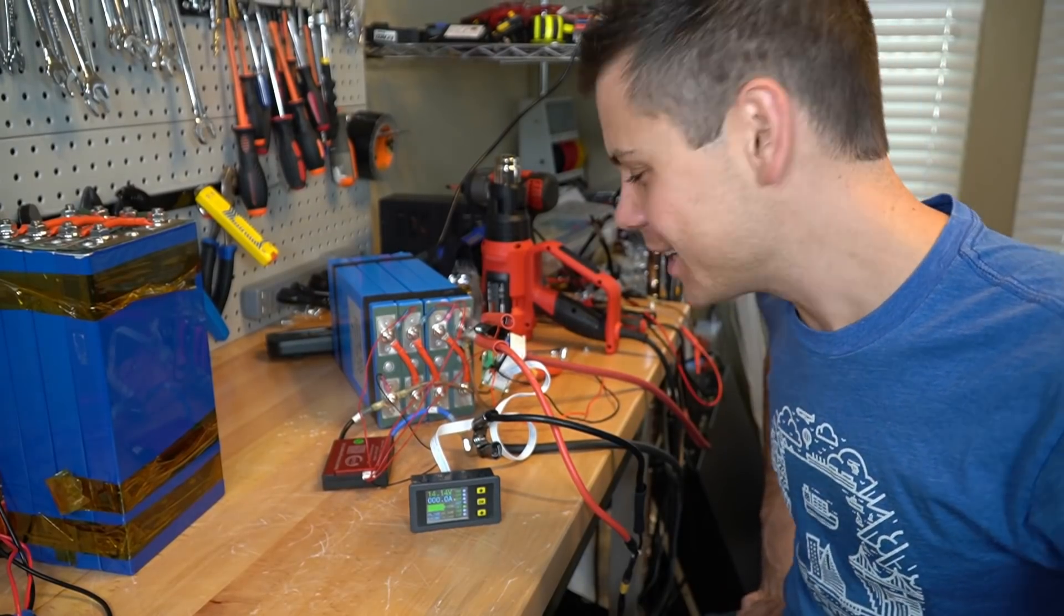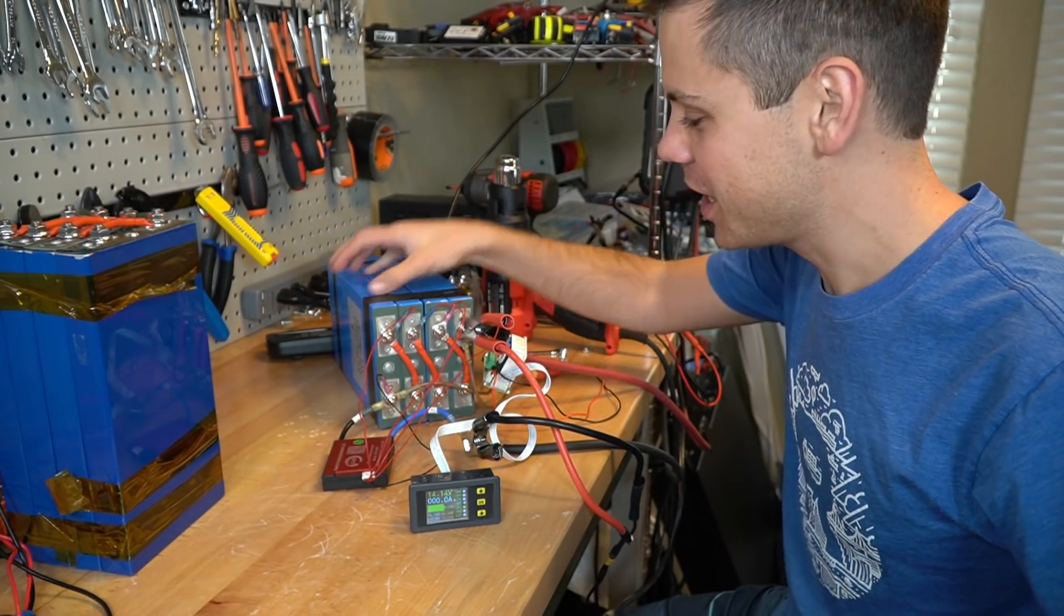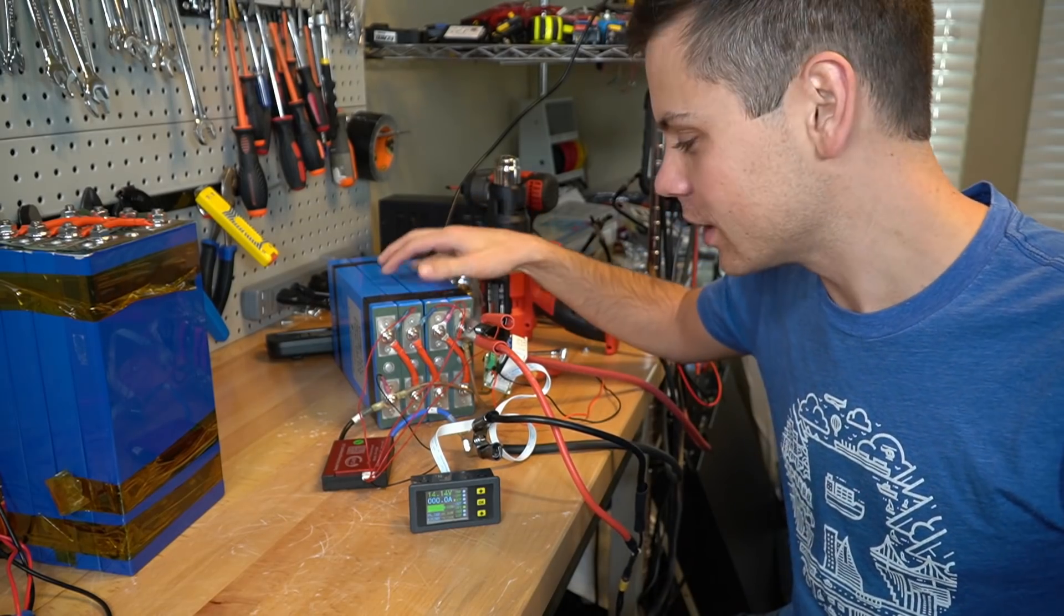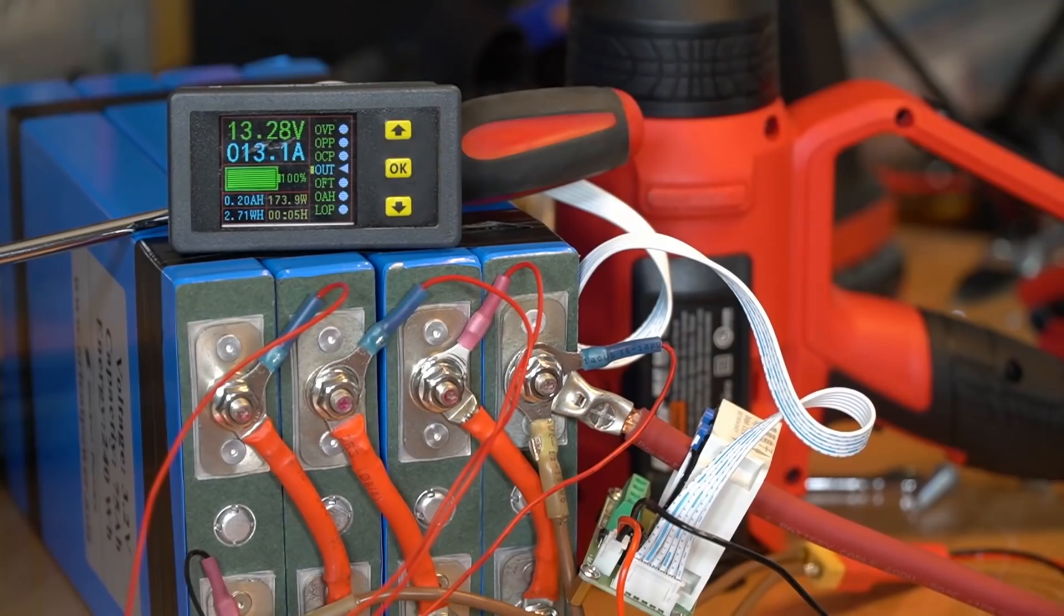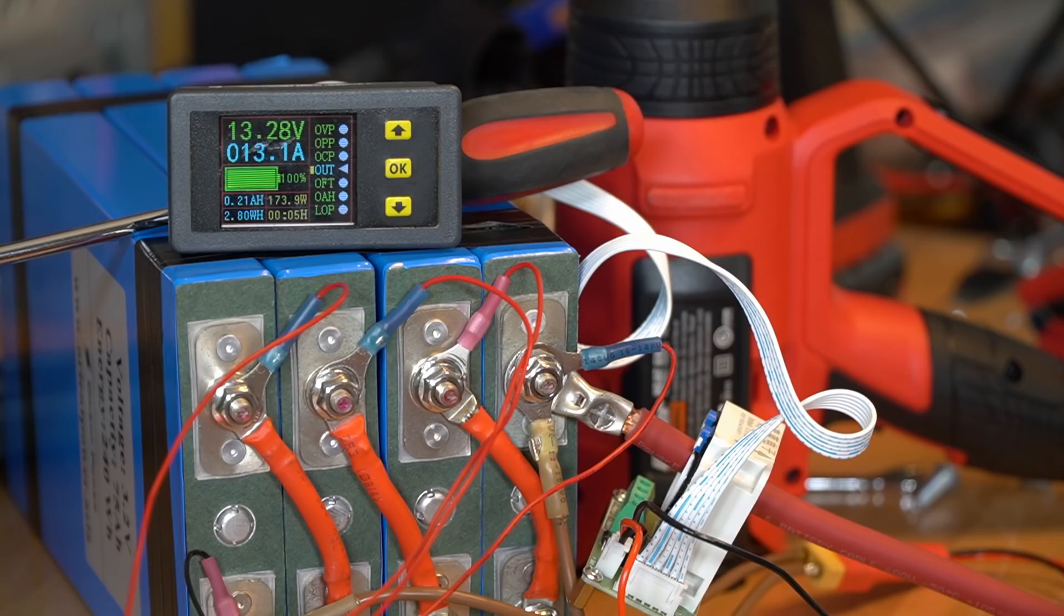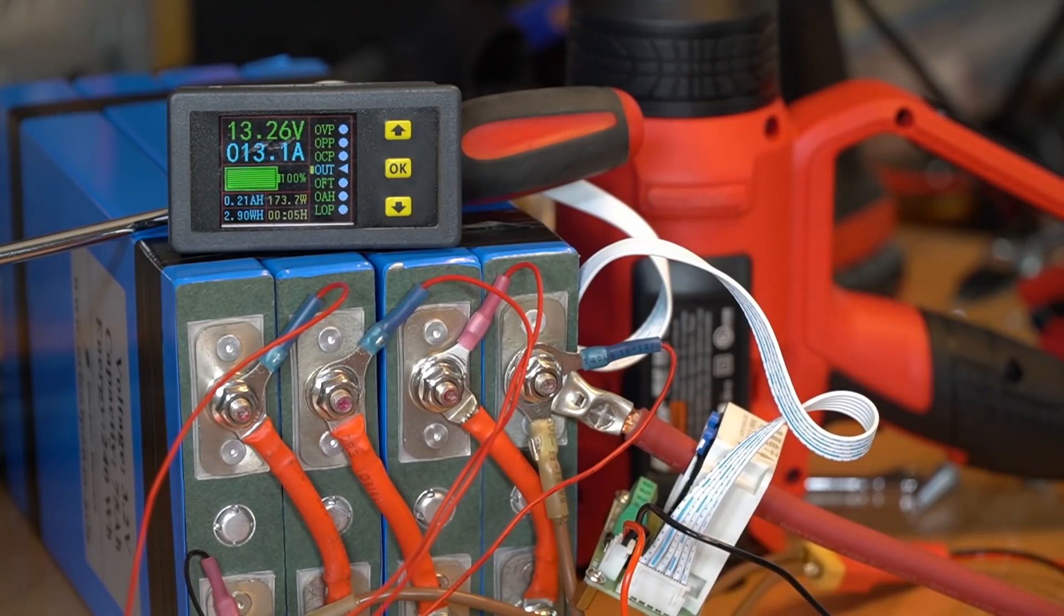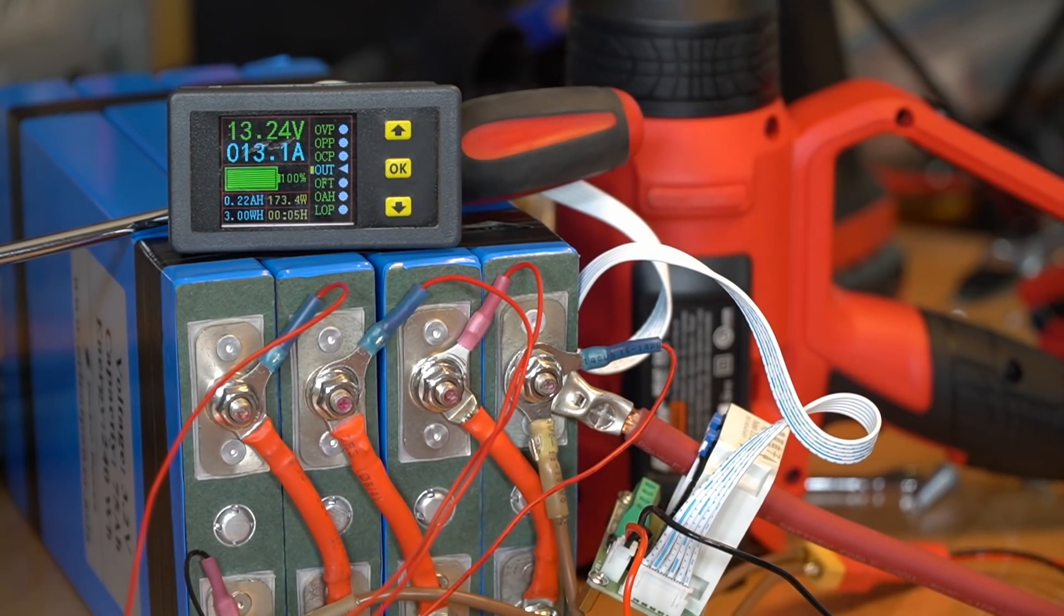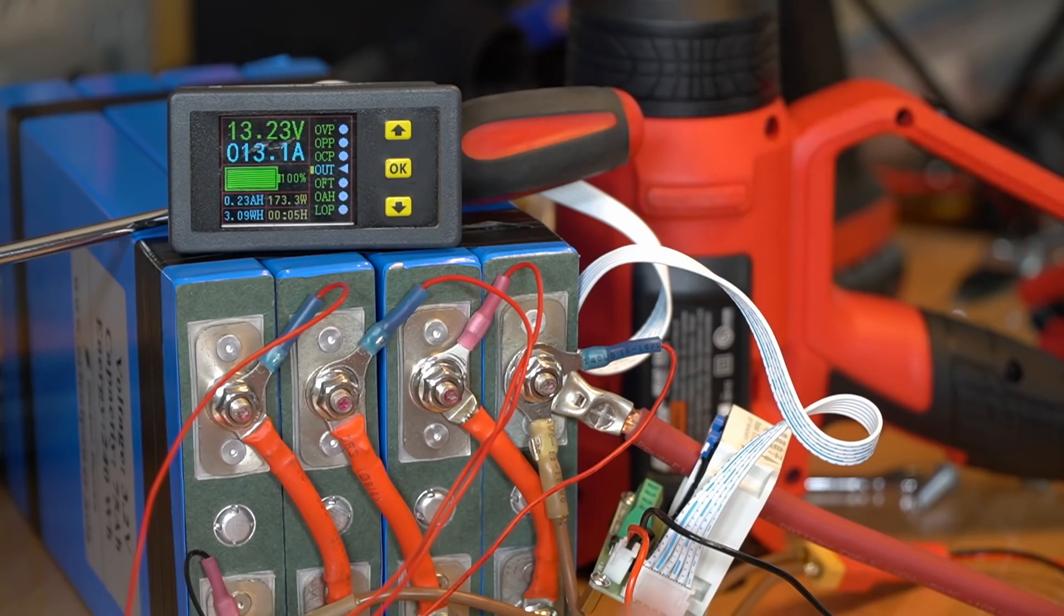So day three of testing and we are going to do the final capacity test. Rated for 75 amp hours. Let's see how many we can get. And because this is a 75 amp hour battery, we're going to pull around 15 amps. 13 is the closest I can get. So this will take like five hours. So we'll come back to it.